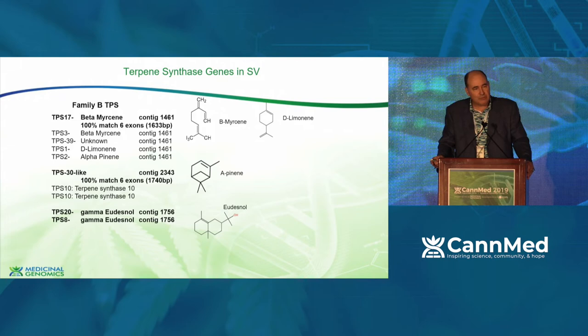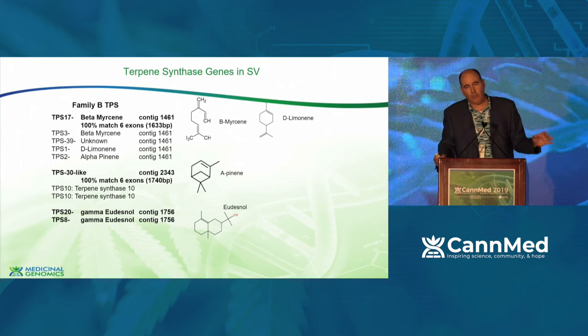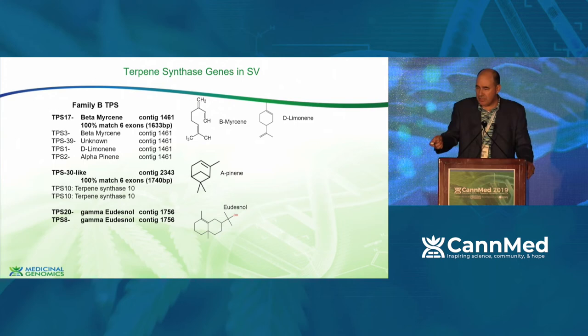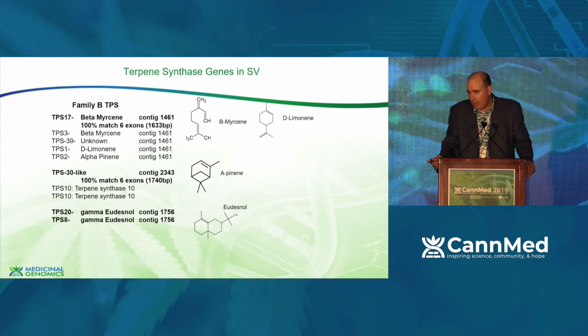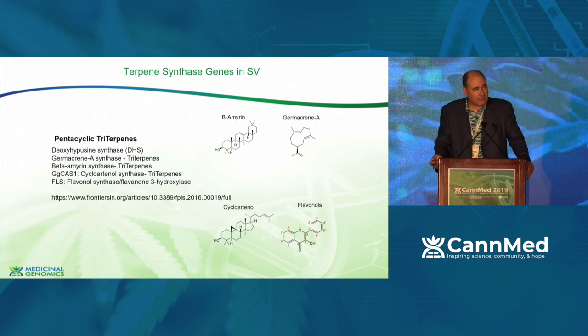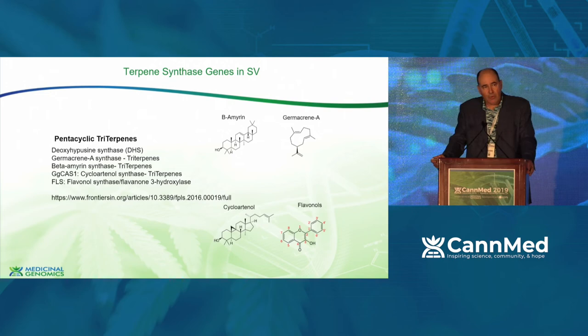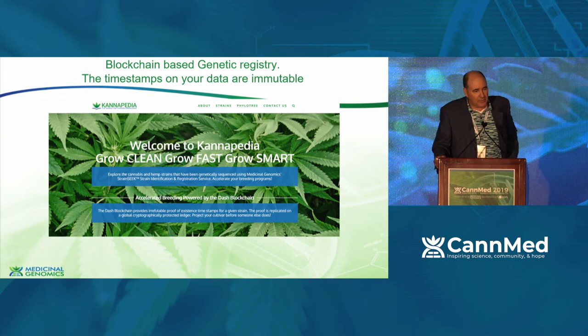These structural variants aren't containing boring things — we're seeing terpene synthase genes inside them. TPS17 is a beta-myrcene gene, and we also have TPS10 and TPS30-like genes perhaps making alpha-pinene and D-limonene. In the terpene landscape, a single gene does not make a single terpene — one gene can make multiple terpenes and multiple copies can contribute to the same terpene. We also see this in the triterpenes. Nobody is measuring triterpenes right now in labs, yet the flavanols are in there and people are publishing on how canflavin genes have an impact in pancreatic cancer and pain.